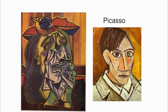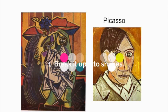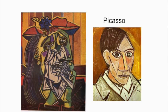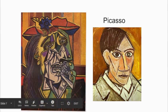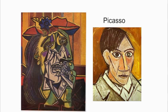The first way to make something cubist is to break it up into shapes — we've got that going here, and with the color we've got that over here too. The second way is to show different views at the same time — so these eyes are looking straightforward and her mouth and chin are to the side.